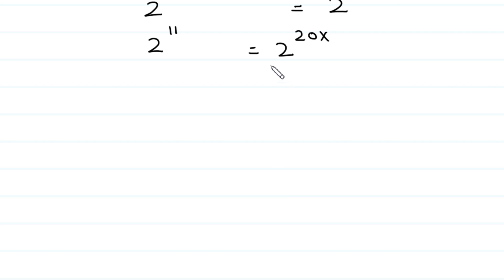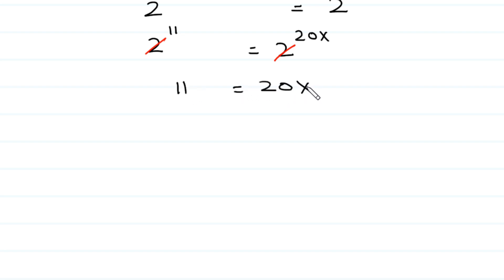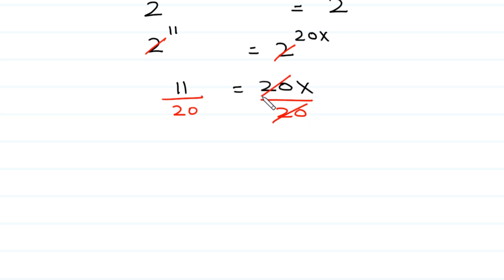Now, the base is the same on both sides, so the bases cancel and we are left with 11 equals 20x. We divide both sides by 20 — at the left side divided by 20, at the right side divided by 20. This 20 cancels with this 20, and the value of x is 11 over 20.